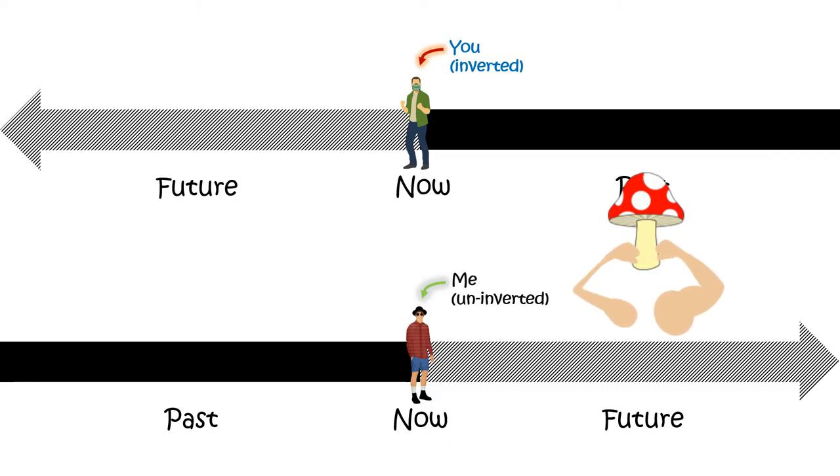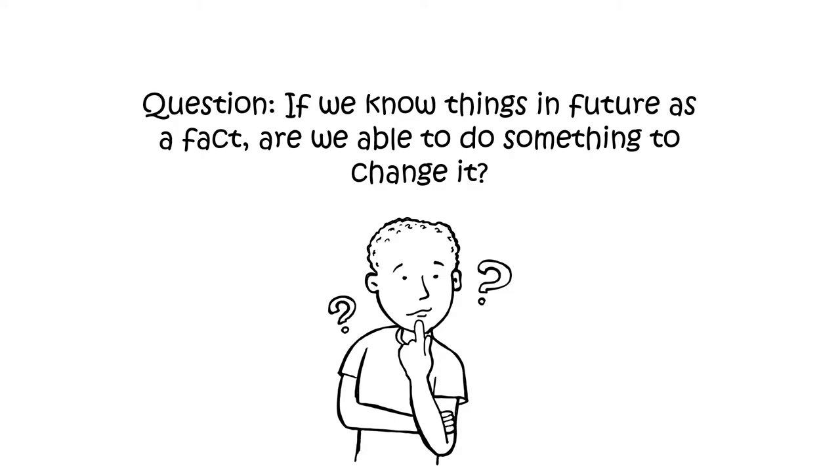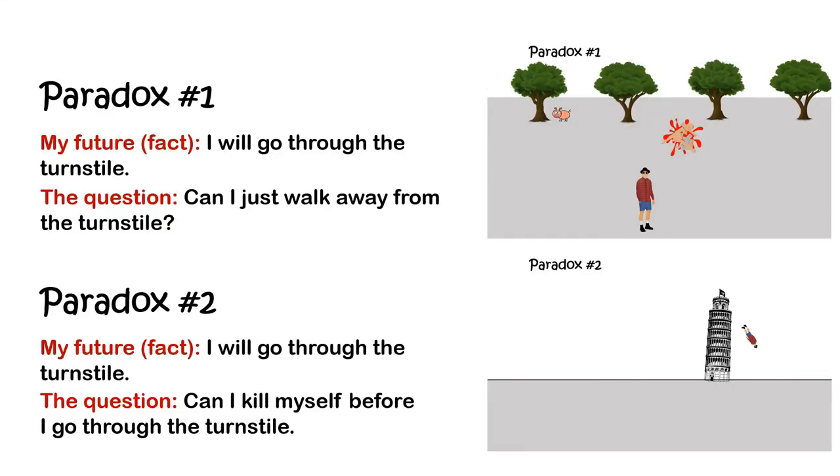But does this have anything to do with the two paradoxes we saw earlier? Yes, it does. You see, what we've learned so far provided us the correct answer to one question. The question is: if we know things in the future as a fact, are we able to do something to change it?